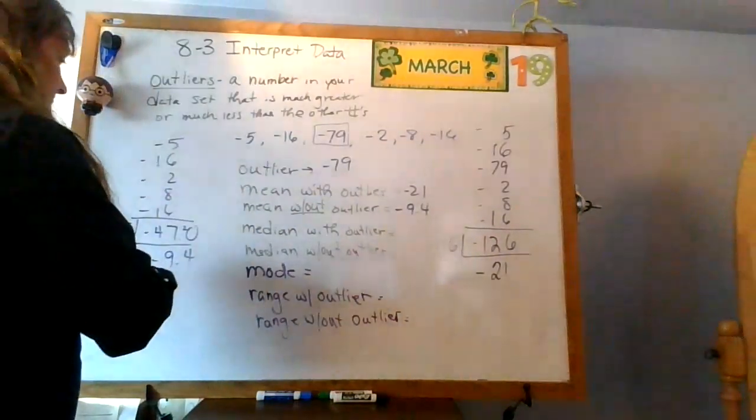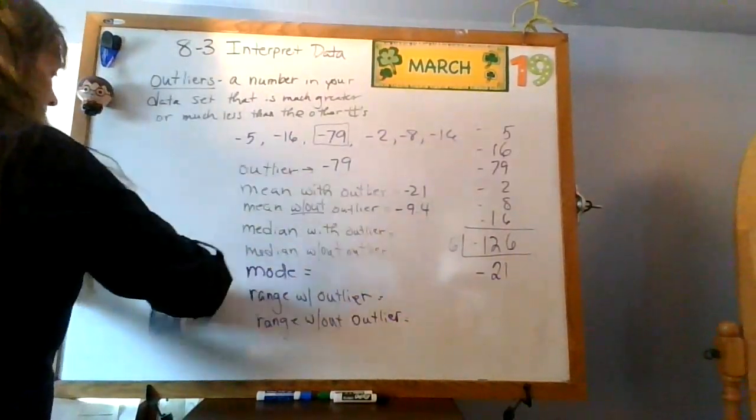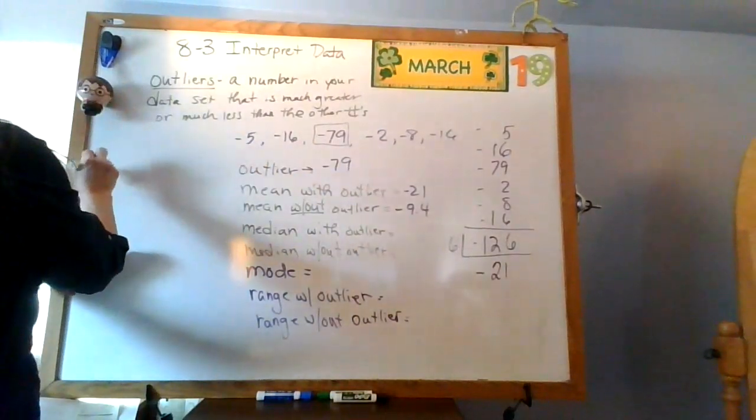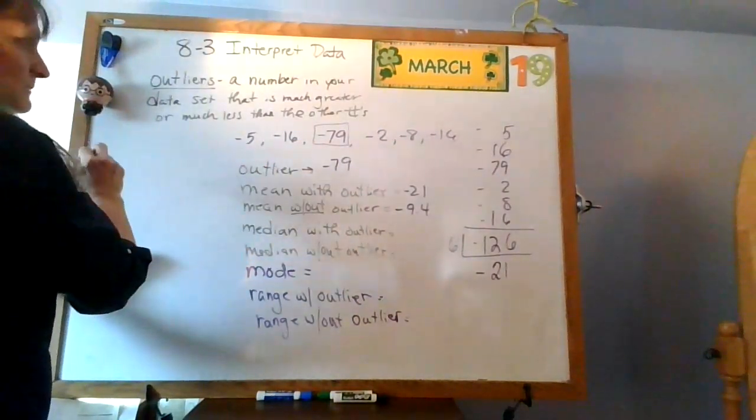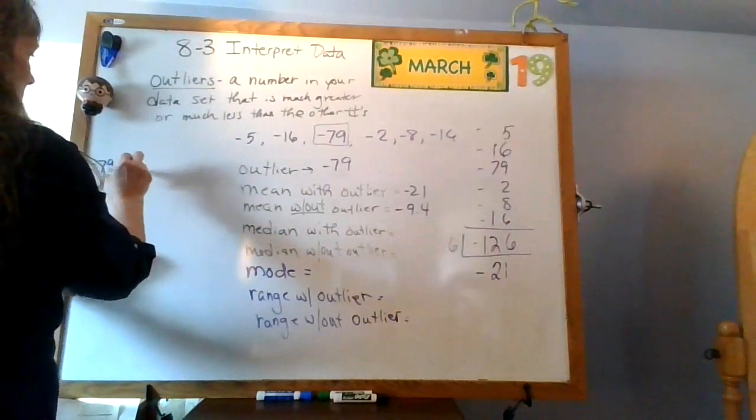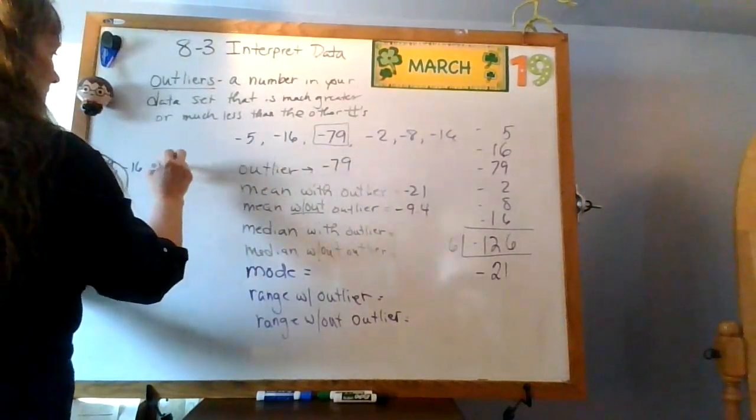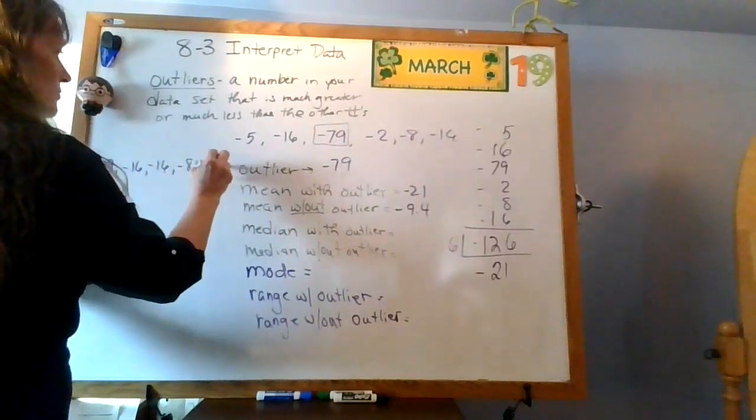What about my median? Well, let's take a look. I have to do this in order. So negative 79 is my smallest number. Negative 16, negative 16, negative 8, negative 5, negative 2.